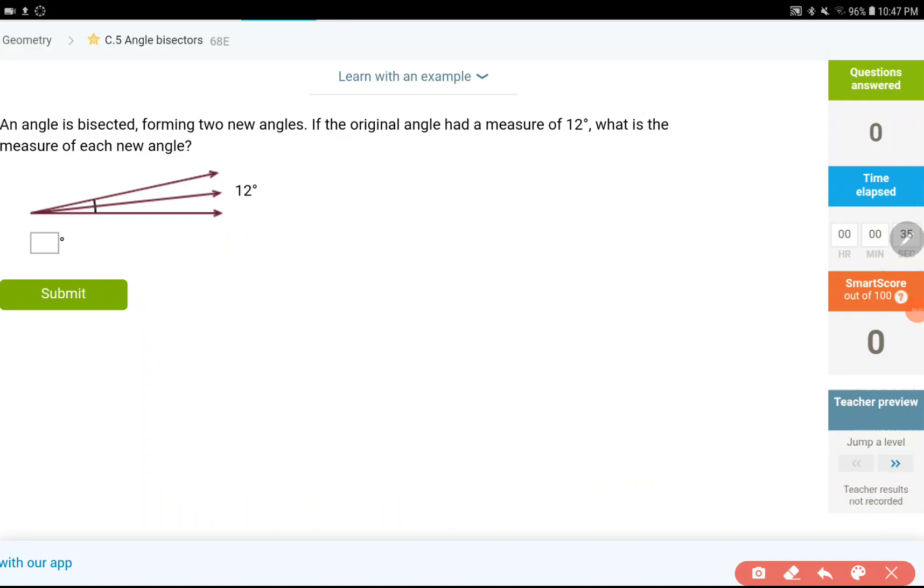Hello everyone, in this video we are going to solve a few questions about angle bisectors. They are going to be pretty simple because usually they're just going to be either divide by two or multiply by two. Because that's what angle bisectors does.